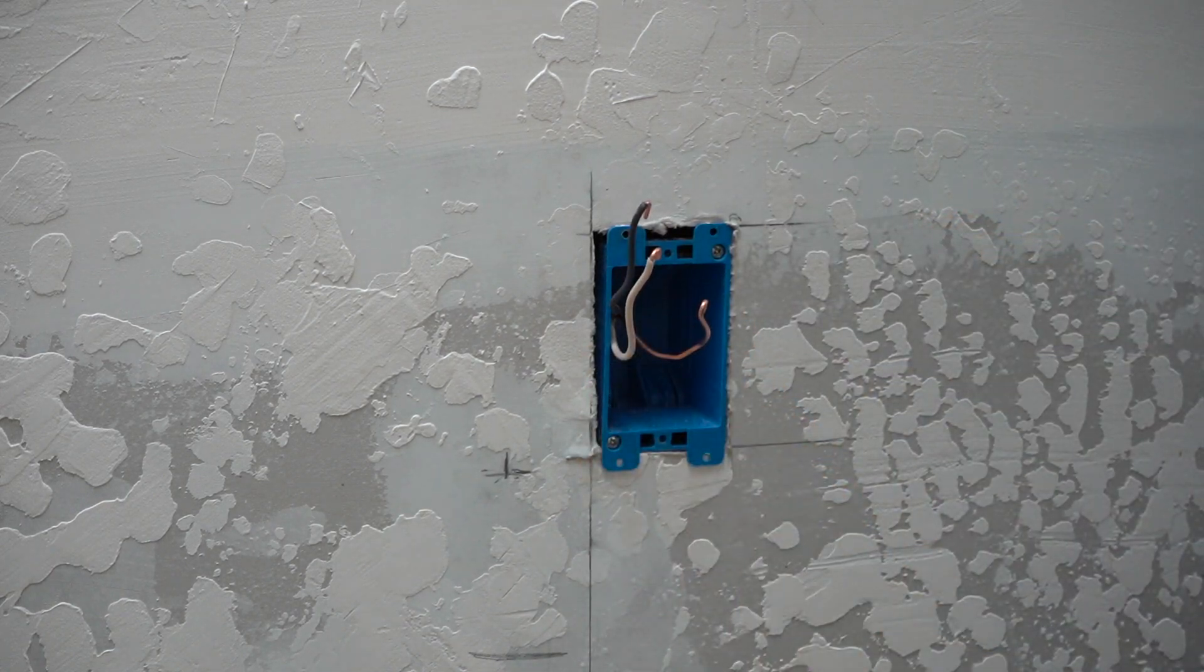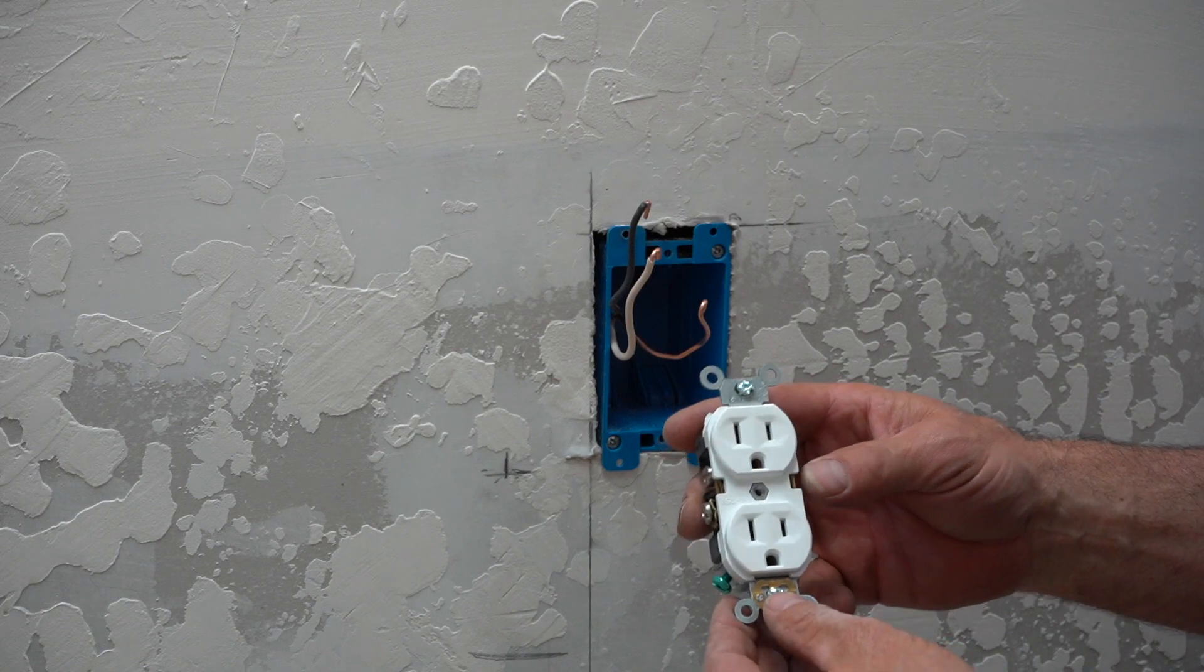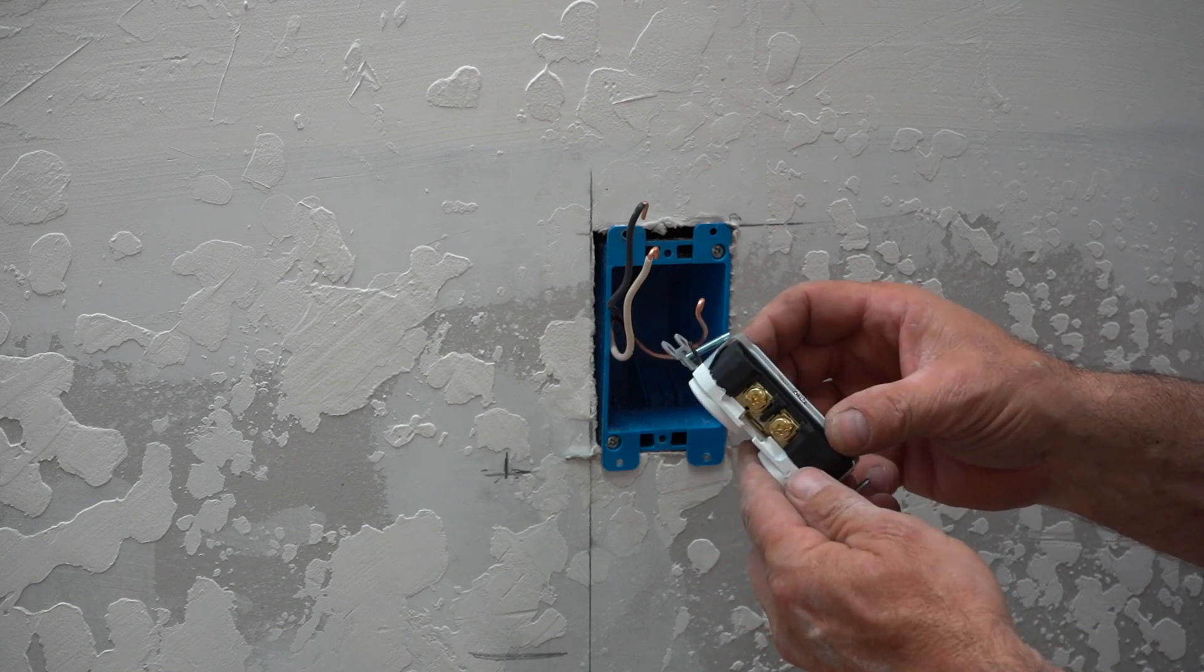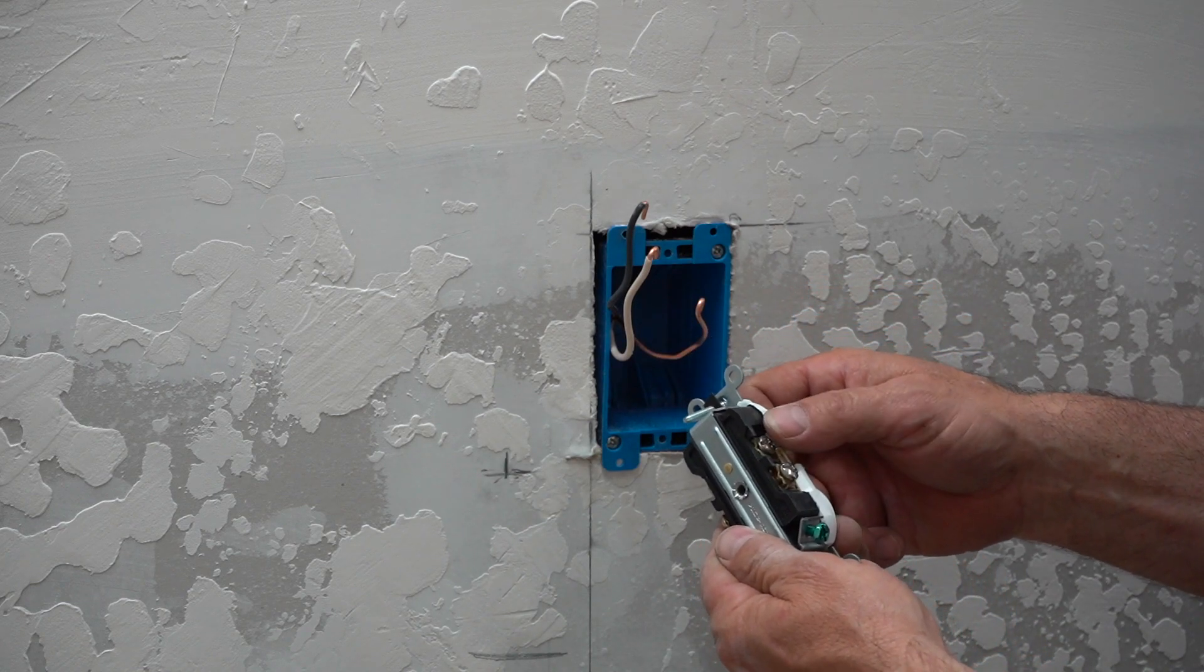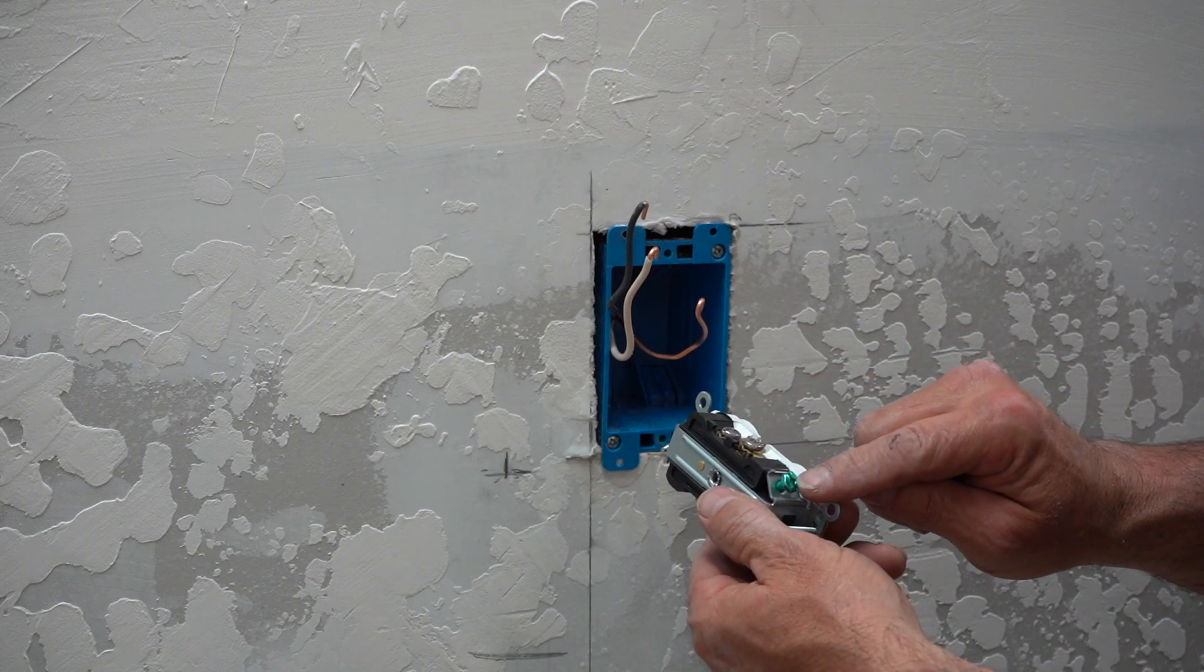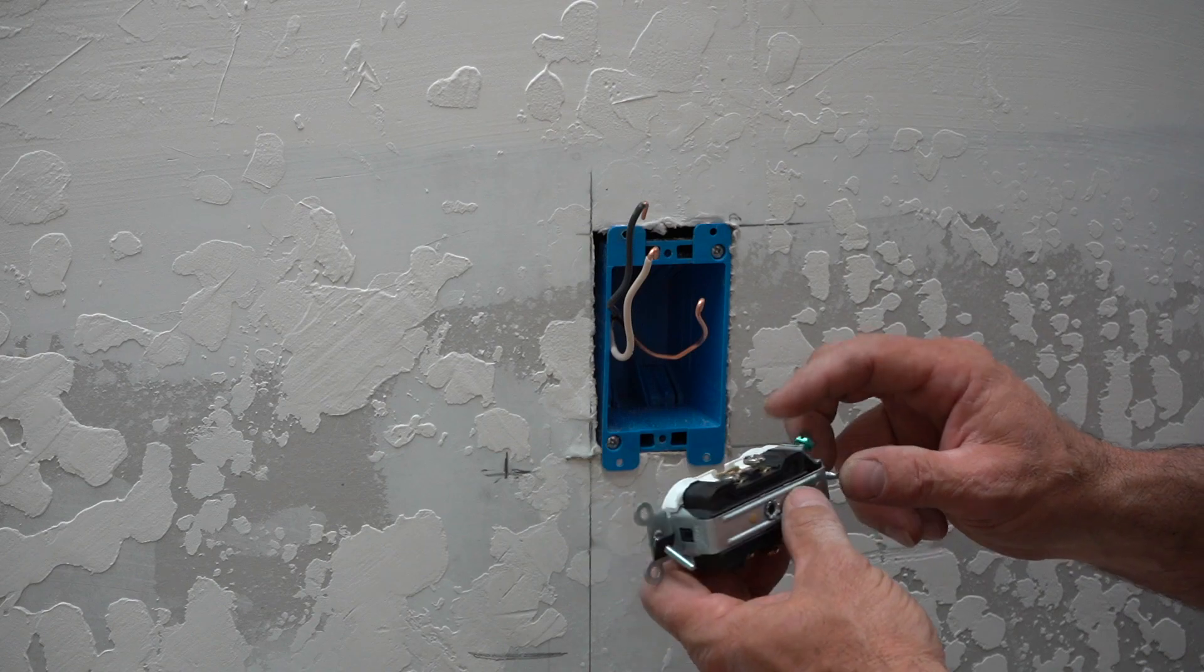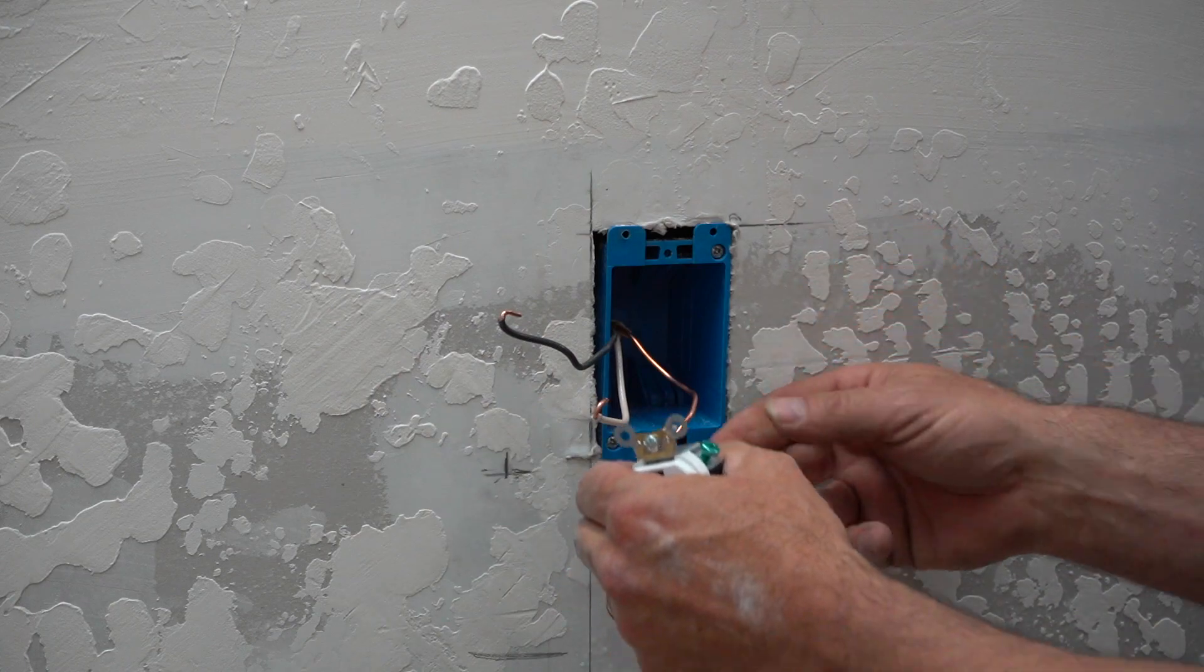Okay, now when you get the new receptacle you're gonna put it with the ground down. We have a hot which is gold, and then we have the common which is silver. Common and the ground are on the same side. We're going to go ahead and install the ground first.